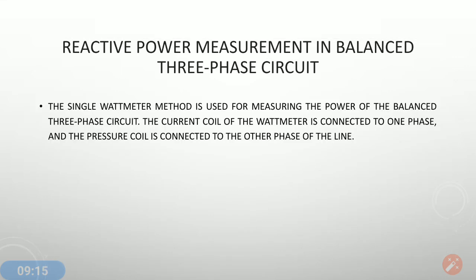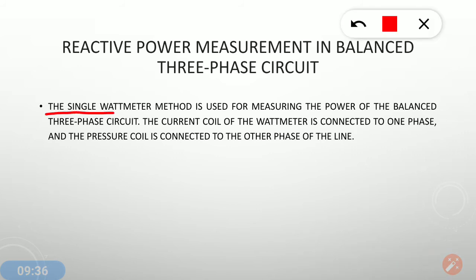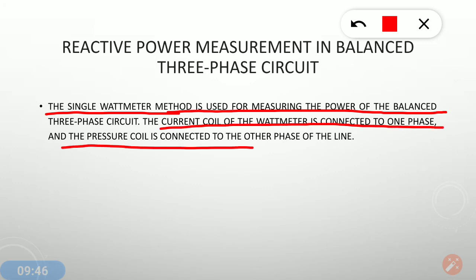Now, the reactive power measurement in a balanced three-phase circuit. For a balanced three-phase circuit, a single wattmeter method is used for measurement of reactive power. The current coil is connected to one phase and the pressure coil is connected to the other two phases of the line.